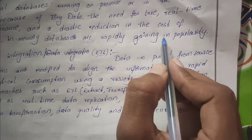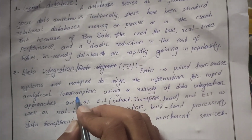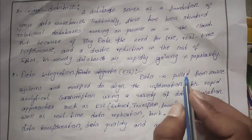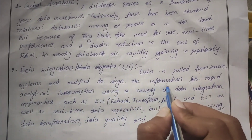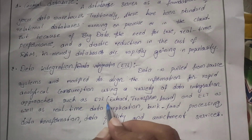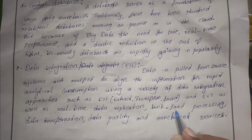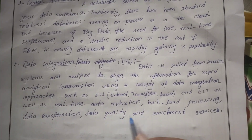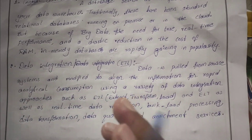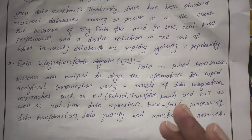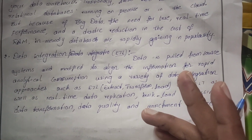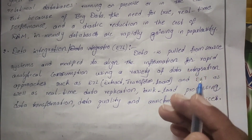Next is data integration, or ETL. Data is pulled from the source system — extracted from the source system — and modified to align the information for rapid analytical consumption, using a variety of data integration approaches such as ETL, real-time data replication, bulk load processing, data transformation, and data quality and enrichment services. The extracted data is modified to support analytical consumption like OLAP reporting and queries.